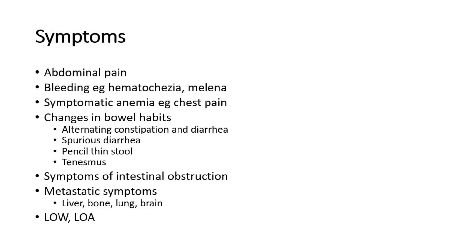The patient most commonly presents with abdominal pain, which accounts for around 44% of all cases. They might have bleeding such as hematochezia — which is fresh bright red bleeding per rectum — or melena, which is dark black sticky stools. They may also have symptomatic anemia, often presenting with chest pain in elderly patients.